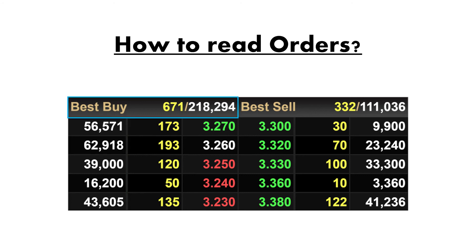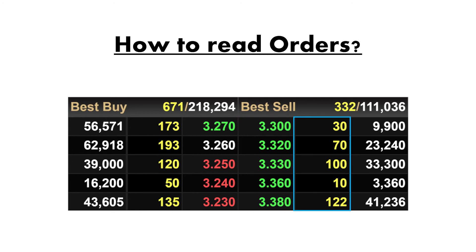On top, the yellow number shows the sum of all orders from the 5 best buy prices, and the white number is the corresponding total monetary value. On the sell side, the same logic applies: the first row shows the best sell prices, the second row shows the total number of lots at each price, and the white numbers show the corresponding total monetary value. Again at the top, the yellow number shows the sum of all orders and the white number shows the total monetary value.